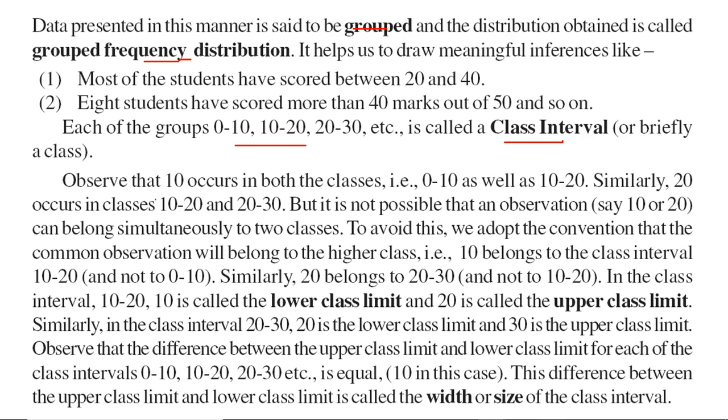As I said, 0 to 10 and 10 to 20 - 10 is occurring in both, so we cannot take 10 in both groups. We will avoid this conflict by our convention: 10 belongs to the next class. So 0 to 9, 10 to 19, like this. The lower number is called the lower class limit, the higher number is called the upper class limit. The difference in all cases is the same - 10 minus 0 is 10, 20 minus 10 is 10. This difference is the width or size of the class interval.